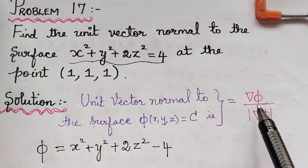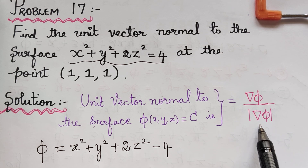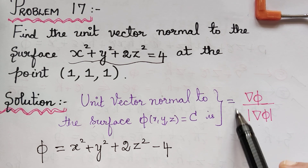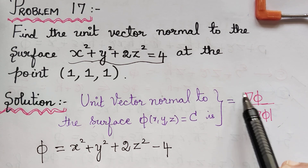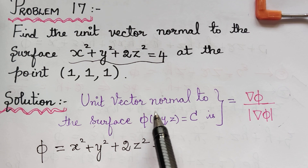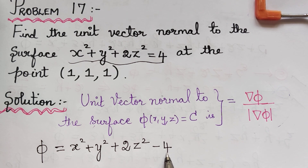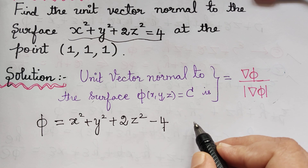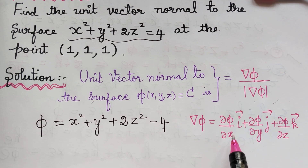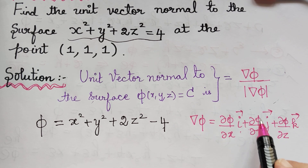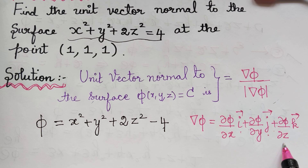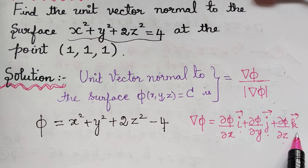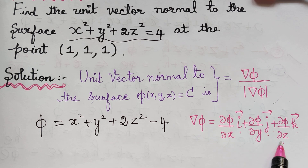Now we have to find ∇φ and the modulus of ∇φ in order to substitute and find the unit vector normal to the given surface. To find ∇φ, we know that ∇φ = (∂φ/∂x)·i + (∂φ/∂y)·j + (∂φ/∂z)·k.